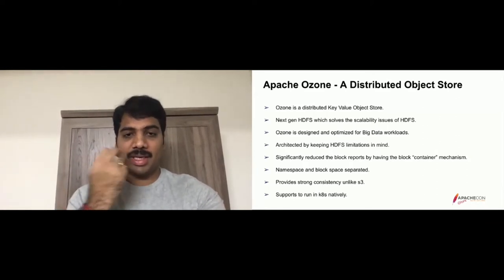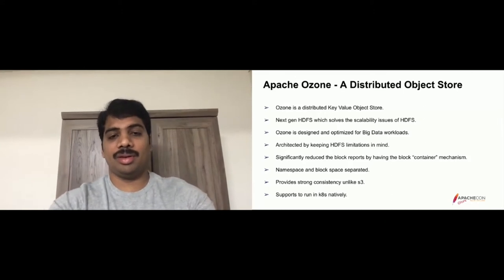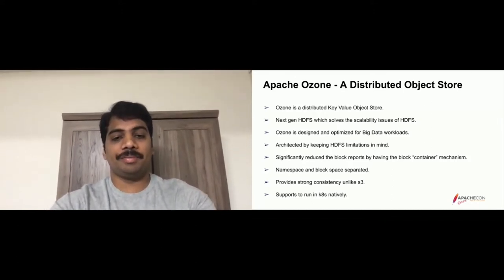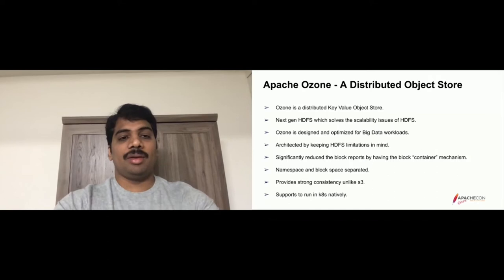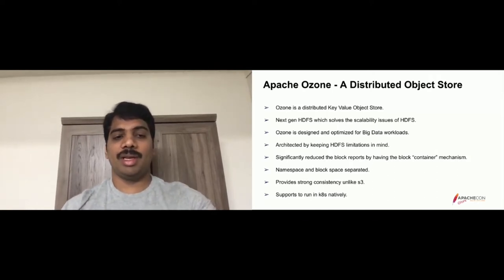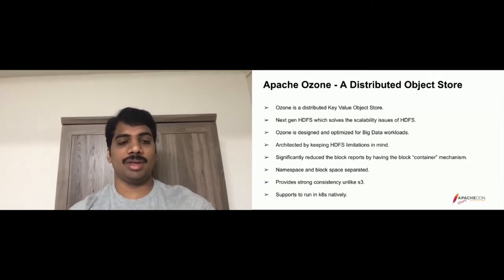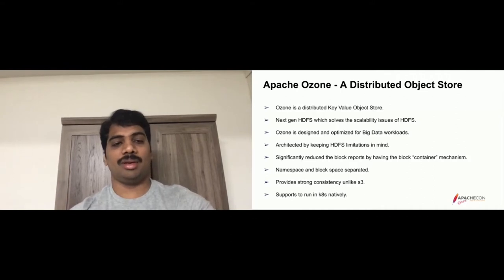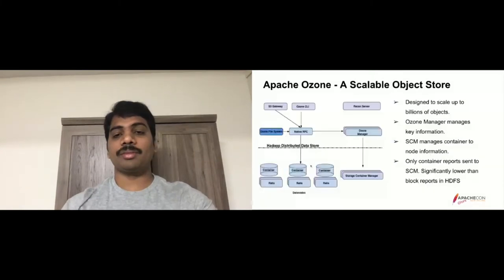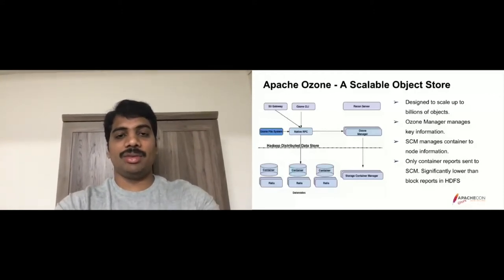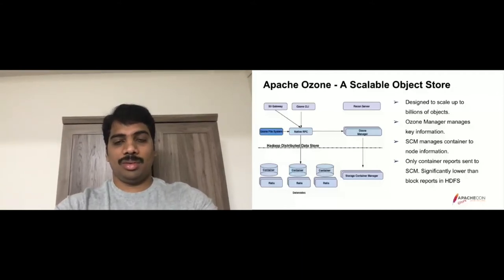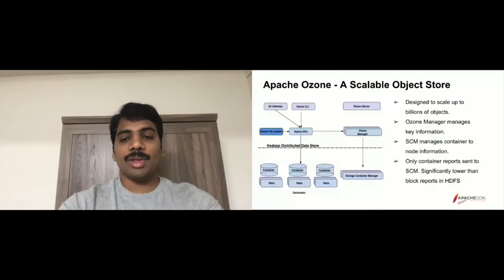Looking at the Ozone architecture at a high level: it has the Ozone Manager, which manages the key space, and the Storage Container Manager, which is responsible for container reports and scheduling replications. It also has a file system layer that works like a distributed file system — similar to how HDFS implements the Hadoop file system layer — so Hadoop applications can easily use this storage. We have already successfully tested around a billion objects, and we have plans to test more.